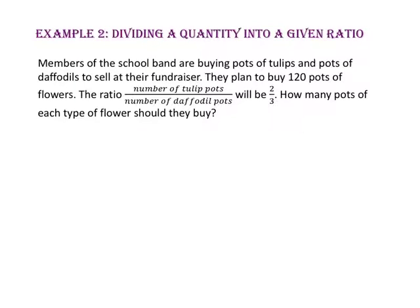In example 2, we will divide a quantity into a given ratio. Members of the school band are buying pots of tulips and pots of daffodils to sell at their fundraiser. They plan to buy 120 pots of flowers. The ratio of number of tulip pots to number of daffodil pots will be 2 to 3. How many pots of each type of flower should they buy? Because our numerator and denominator add up to be 5 and we want 120 pots, we need to unsimplify our ratio so that when we add the numerator to the denominator, we will get 120 pots. Since we don't know that number, let's use x as our variable. Let's add our numerator 2x to our denominator 3x and set it equal to 120.